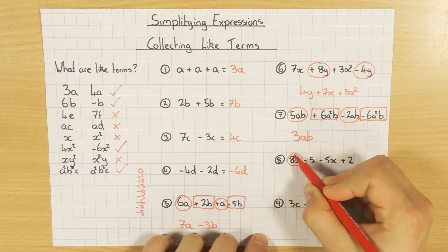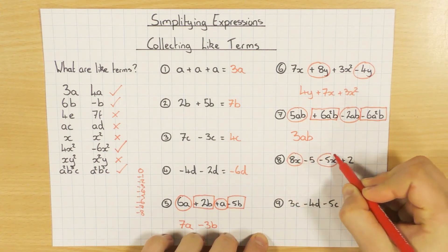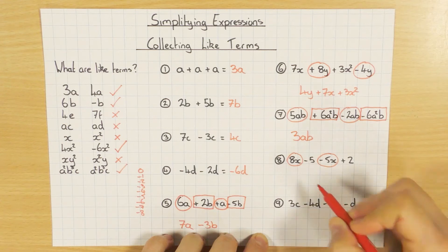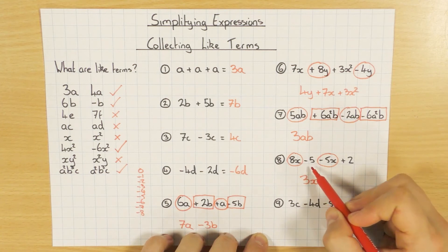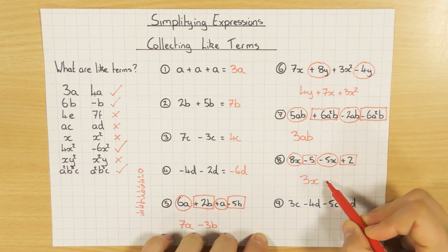Example 8 then. Again, I've got my 8X minus 5X. So 8X take away 5X leaves me with 3X. And then I've got some numbers here, which is not a problem. We can simplify them. So minus 5. And I just add 2, which gives me minus 3.